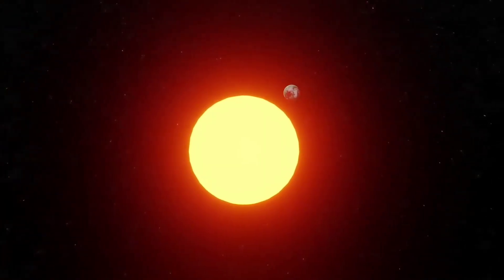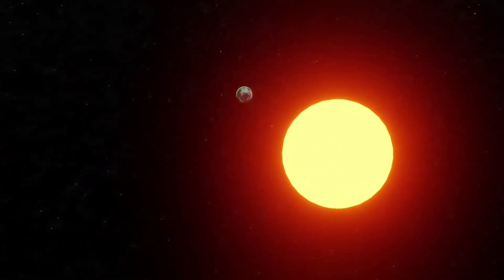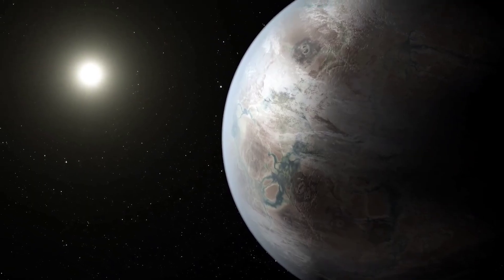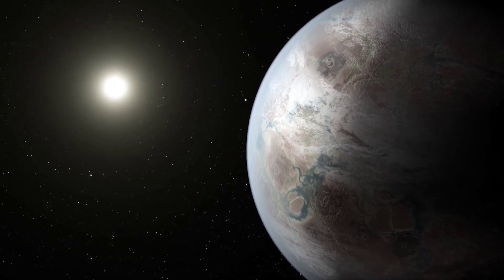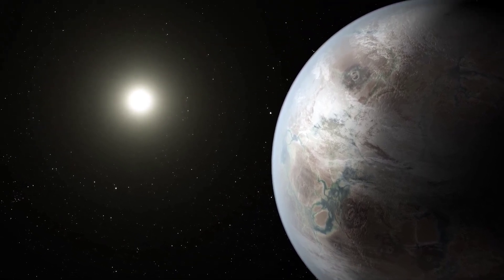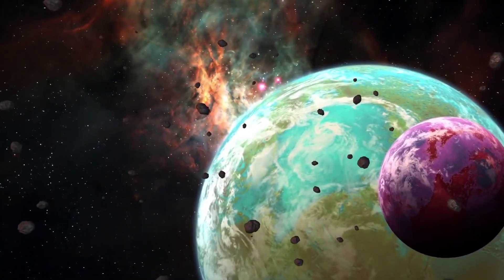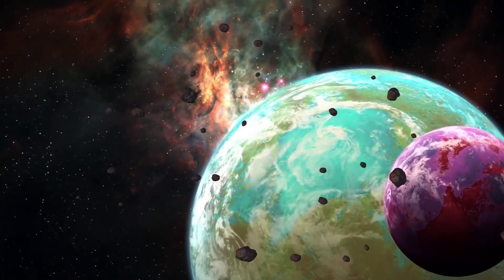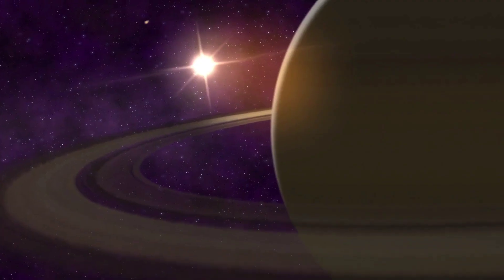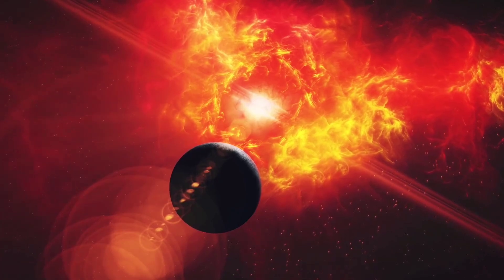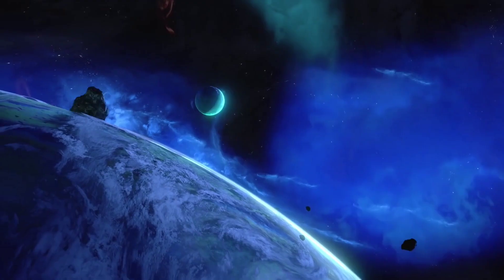The distance between WASP-96b and its sun-like host star is only one-ninth of the gap that separates Mercury and the Sun, and the planet completes one circle around its host star every 3.5 Earth days. WASP-96b is a great target for atmospheric investigations due to its massive size, short orbital period, puffy atmosphere, and the absence of neighboring objects in the sky that could be contaminated by the light from other objects.